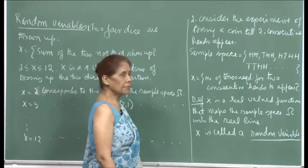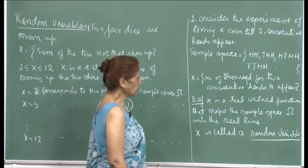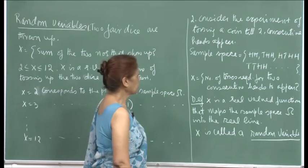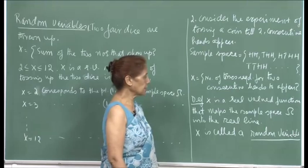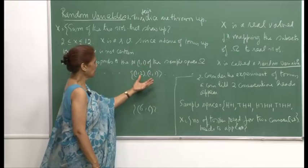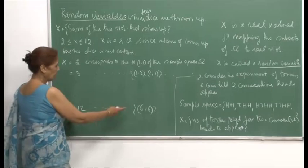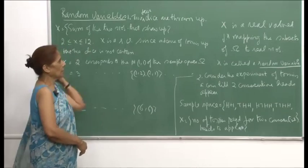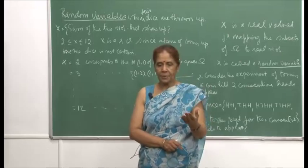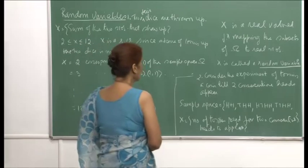One can now give a formal definition of a random variable: x is a real-valued function that maps the sample space omega into the real line. This x is called a random variable. When x is 12, it corresponds to the singleton (6,6). Such a function — which is real-valued and maps subsets of the sample space corresponding to an experiment to real numbers — we call a random variable.